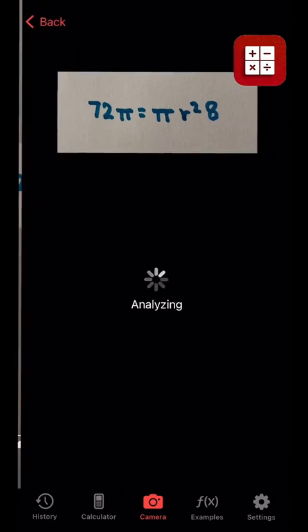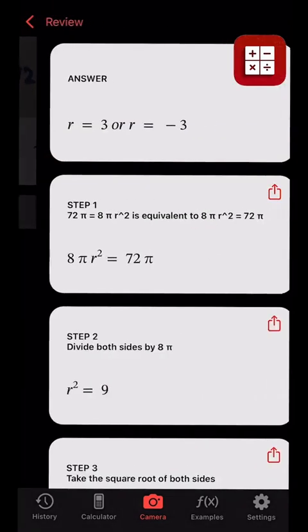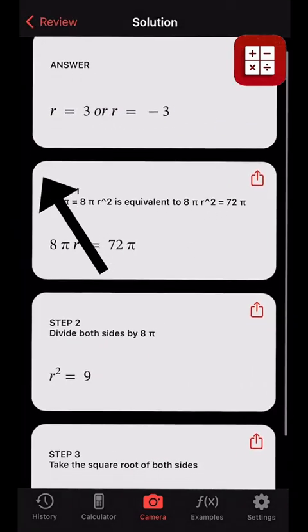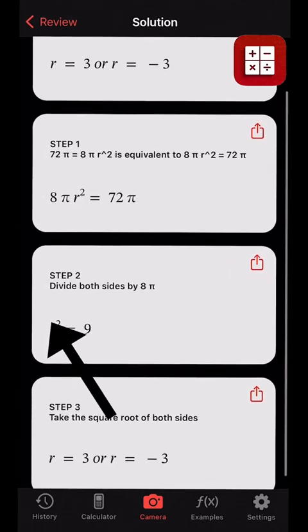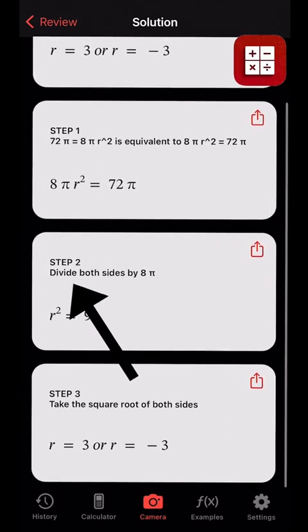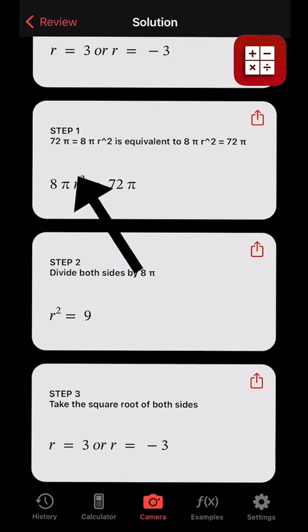If we solve this equation for r using the algebra math solver app, we'll see that r must be negative 3 or 3 because we first divide both sides of the equation by 8π to get r² = 9. By the way, you can first rearrange the equation to have r on the left side. Lastly, you can take the square root of both sides of the equation.